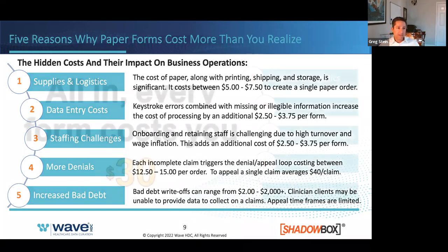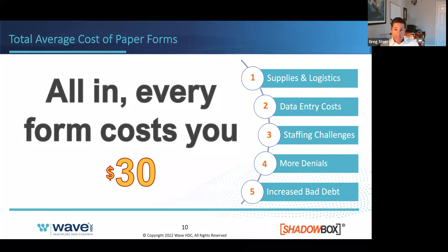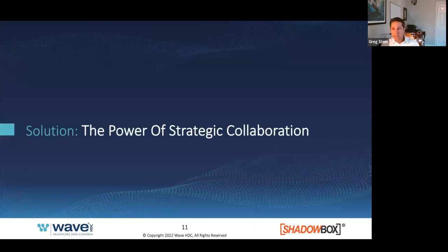All in — supplies and logistics, data entry costs, staffing challenges, denials, and increased bad debt — every form written on paper that comes into your lab costs $30 or more. From a business management perspective, there has to be a better way, and there is. It is possible to eliminate these costs and make electronic ordering fast and simple without breaking the bank or taking forever to implement. It's not just about electronic ordering — it's also about getting great, complete, and accurate data.